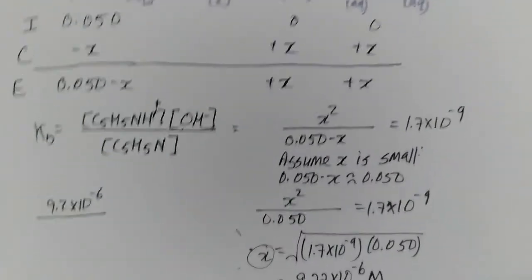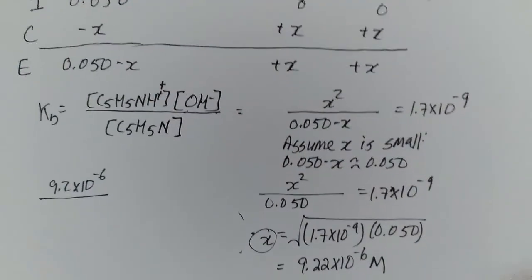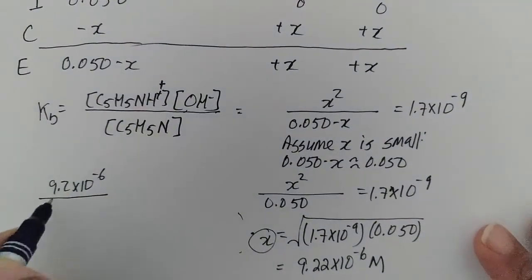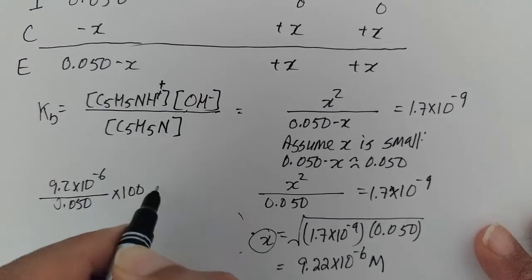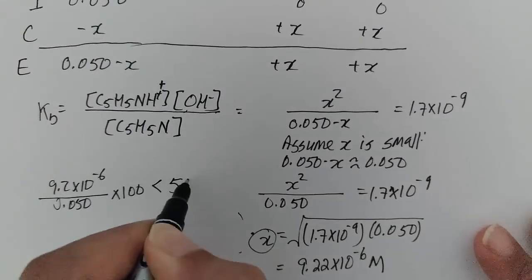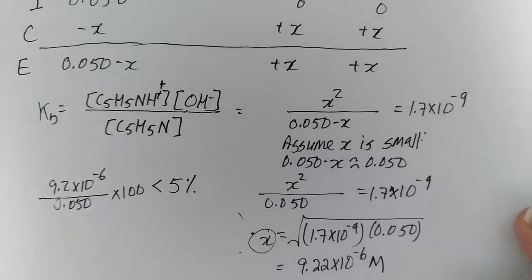They tell us it's a 0.050 concentration initially. So we multiply that by 100 to get a percentage, and that cutoff has to be less than 5%. If you have less than 5% ionization, then this assumption is valid.